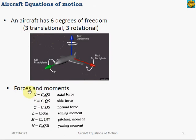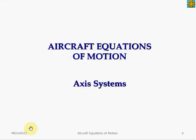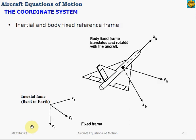These 6 equations of motion that we will derive will be due to these forces and moments. Before we write the equations, let's establish our axis system. In general, there are two main reference frames involved in rigid body dynamics: the earth fixed frame, or the inertial frame, which is fixed to the earth, and the body fixed frame, which is fixed to the rigid body — in our case, the aircraft.